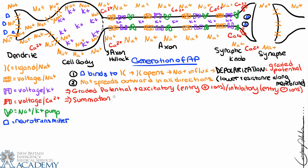Graded potentials usually don't occur alone — we have what's called summation. There are two types: temporal and spatial. Temporal means that the sodium ion channels would open and close, allowing some ions in, then close again. Shortly after, we open them again and have another rush of sodium — increasing the frequency with which the channels open. Those graded potentials are cumulative: a little sodium in, a small increase in membrane potential. If we open the channel many times in a row, the total number of sodium ions inside the cell accumulates rapidly.